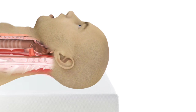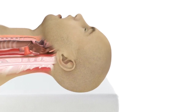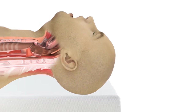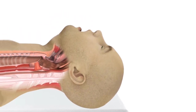The most common way to deal with such closures is to stretch it open, known as esophageal dilation. This can be accomplished with bougies of increasing diameter or by inflating a balloon.